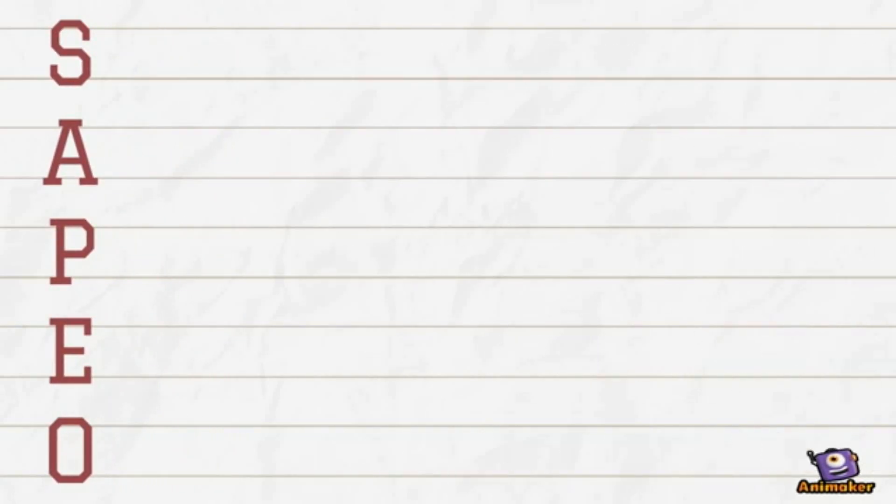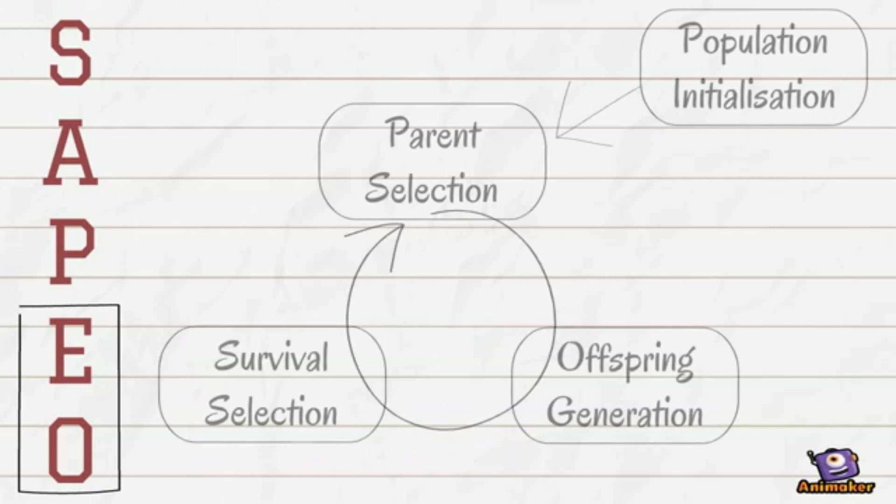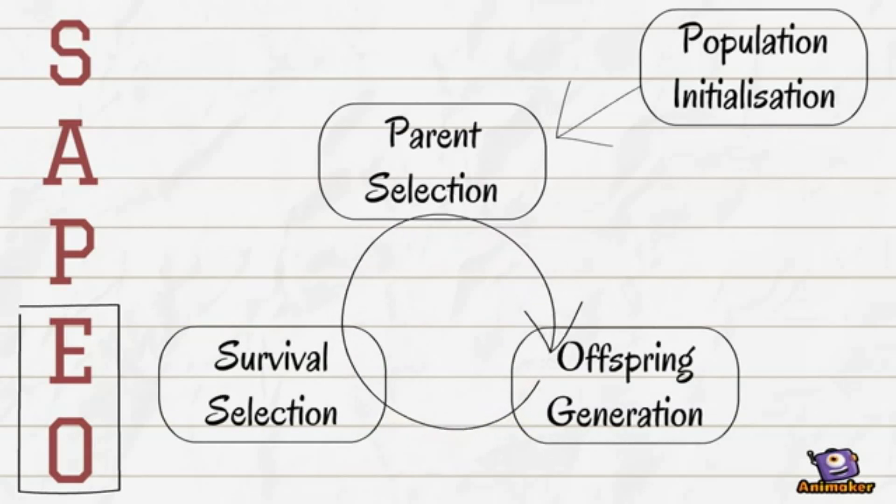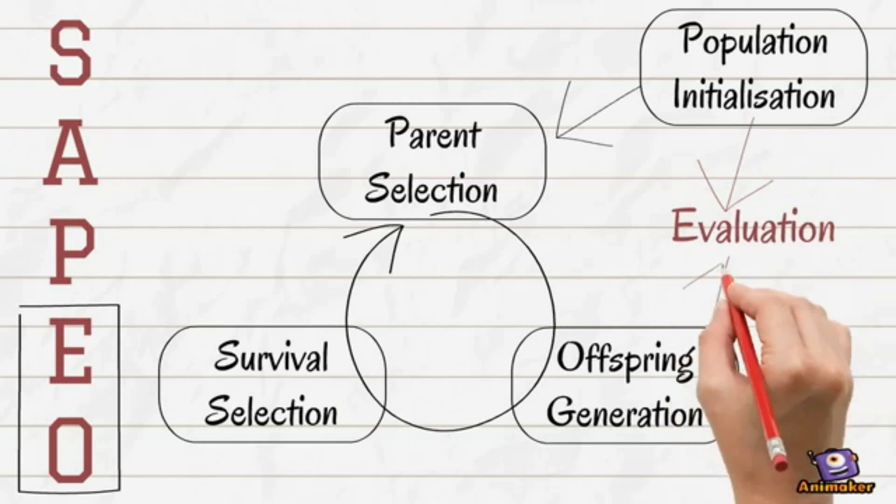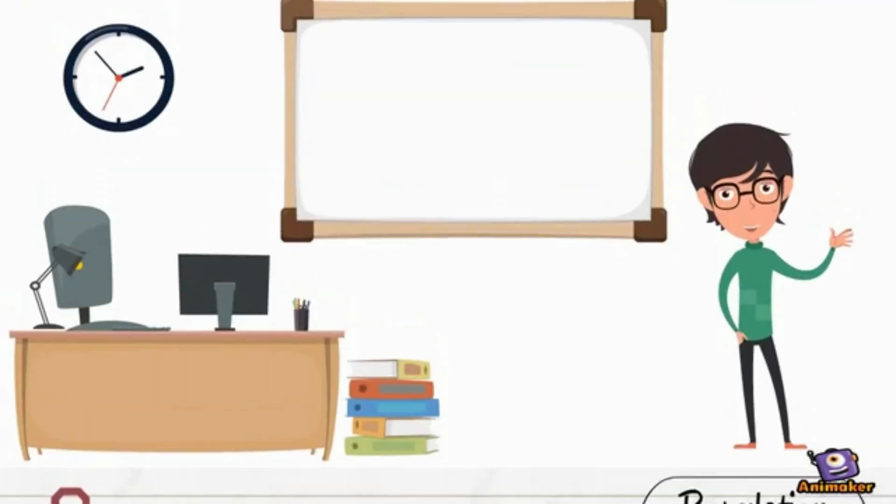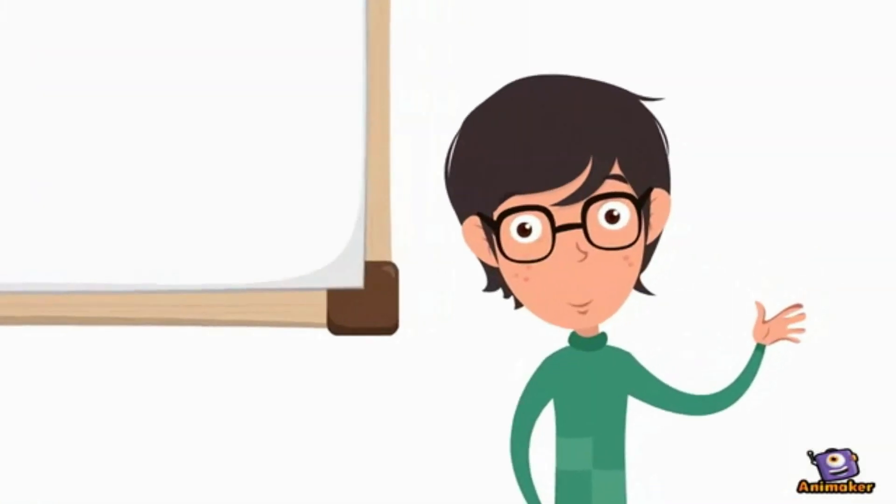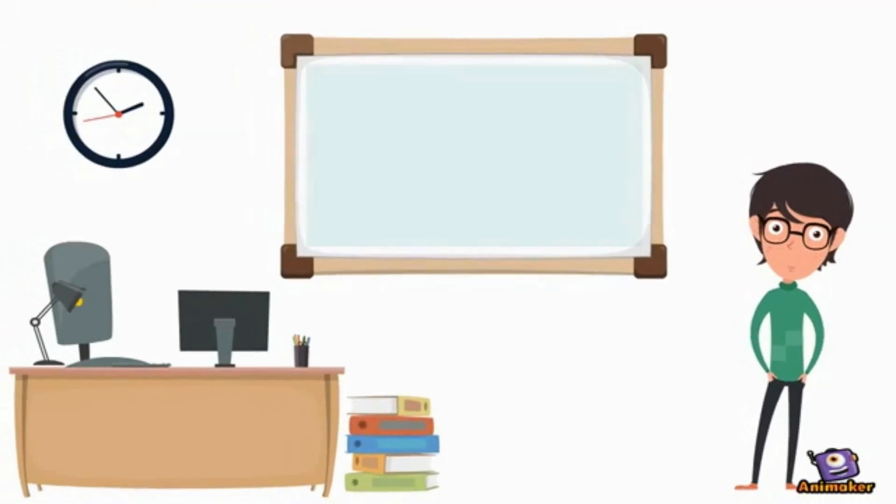SAPEO is still an evolutionary algorithm and follows the same scheme. However, it is based on the following realization. Usually, all solutions in an evolutionary algorithm are evaluated as soon as they are created. However, the only part where the fitness value is really needed is the survival selection. What if you could make the same selection but based on predictions and not on actual fitness evaluations?